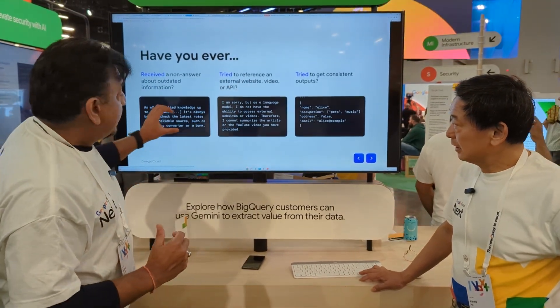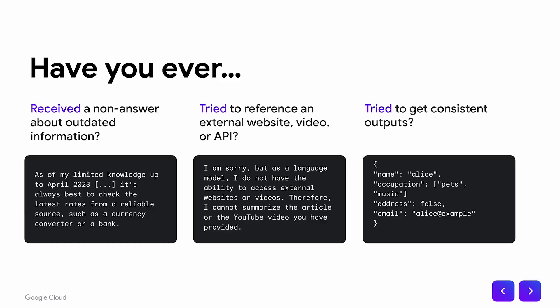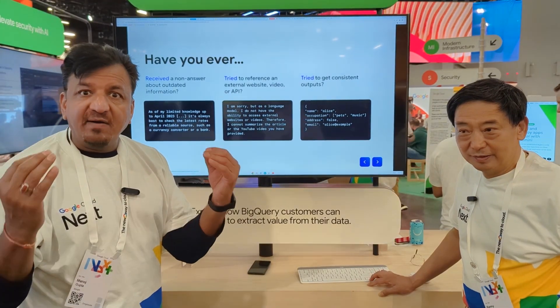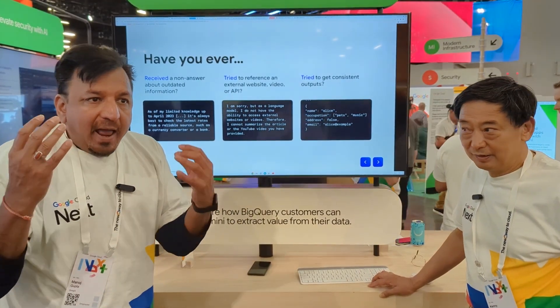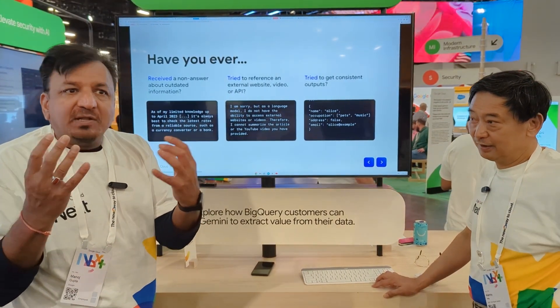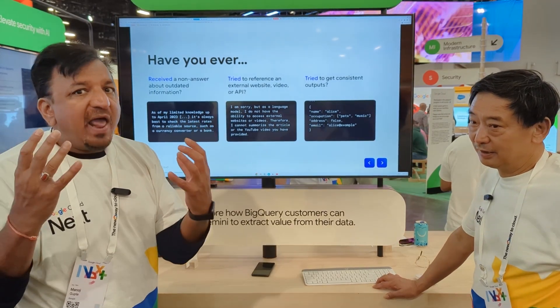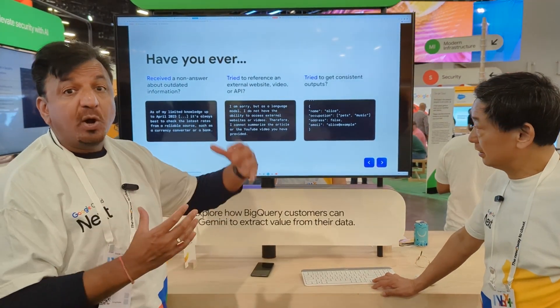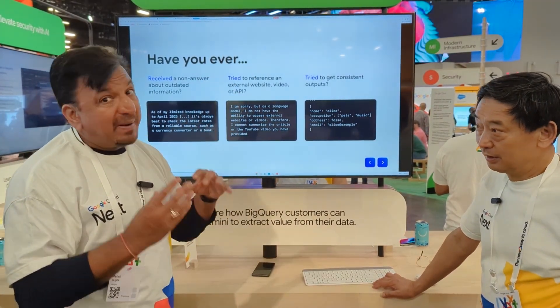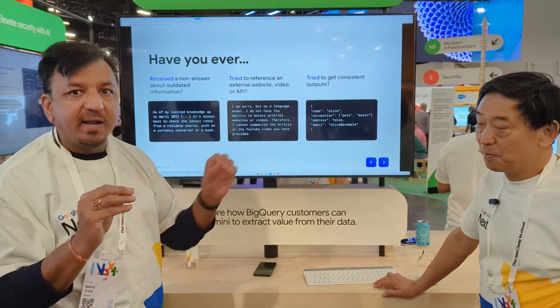One of the challenges this solves: in the past, large language models were frozen at a point in time, making information outdated. For example, if you query the currency exchange rate, the LLM might say it doesn't have today's data and can only show something from last year — but that's not what you want. You want the real-time exchange rate.